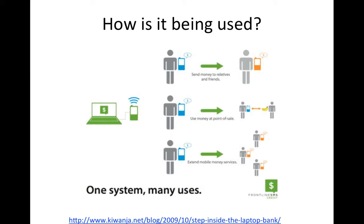You may have heard of M-Pesa, which is another mobile money solution very popular in East Africa. FrontlineSMS Credit is similar — it allows you to send money, remit to relatives and friends, use money at the point of sale, or extend mobile money services. It uses a very simple phone and a laptop as the server, allowing money to change hands without forcing the individual to go to the bank physically — which thwarts many efforts because banks are often far away and not accessible. Essentially, it allows people to transfer money to one another via a very simple SMS phone.